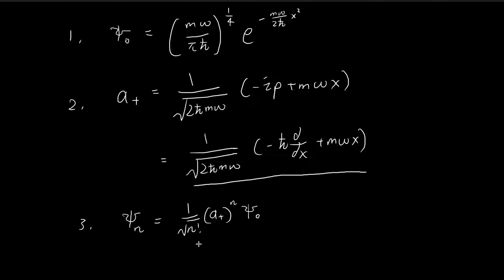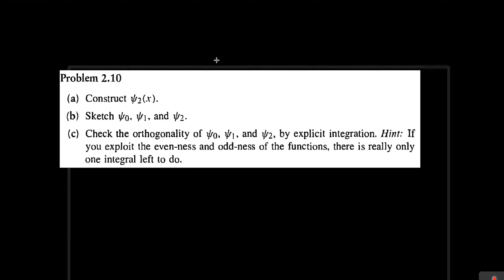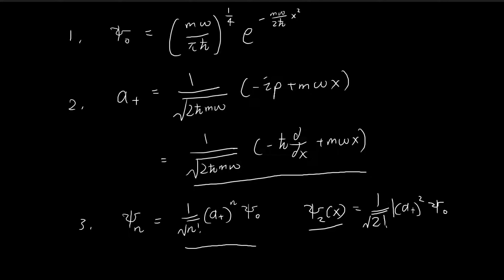The nth stationary state is given by this formula. In our case, we're looking for the second stationary state, so our formula is going to look like this: 1 over the square root of 2 factorial, times a+ squared, applied to ψ₀. So in order to find ψ₂, let's try to evaluate this component — applying a+ to ψ₀ two times.